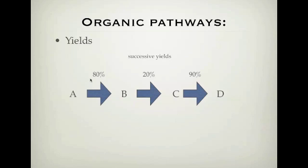Well, I need to look at what 20% of 80% is and what 90% of what that is. So the overall yield is only 14.4%. I look at 20% of 80, and then 90% of that number will give me my overall yield.